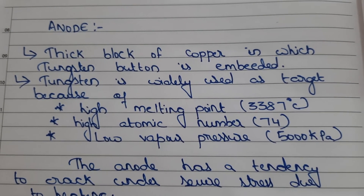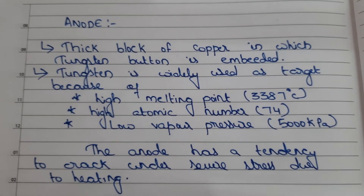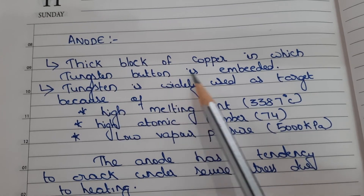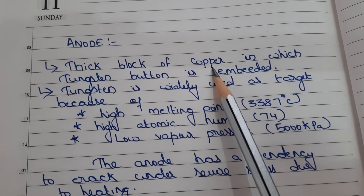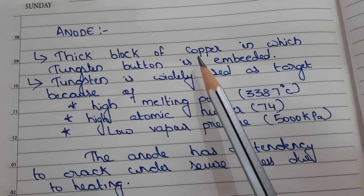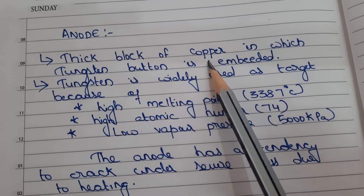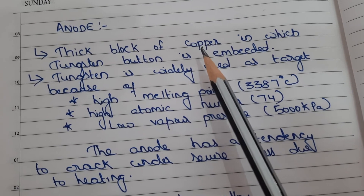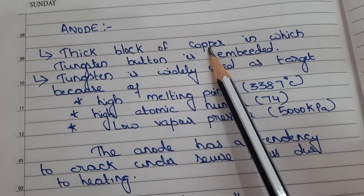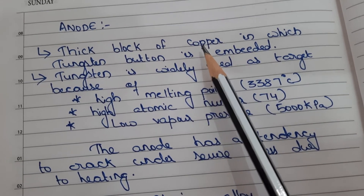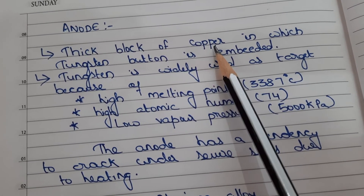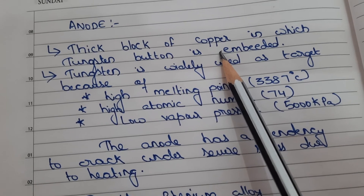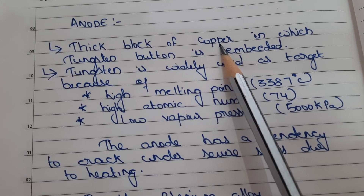The next part of the x-ray tube is the anode. The anode consists of a thick block of copper in which a tungsten button is embedded. We use copper because as a result of x-ray production, 99% heat is generated inside the x-ray tube. Copper enables this heat to be conducted towards the external environment, reducing the temperature inside the x-ray tube.